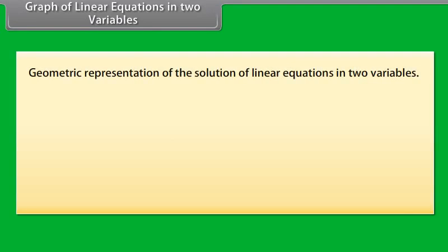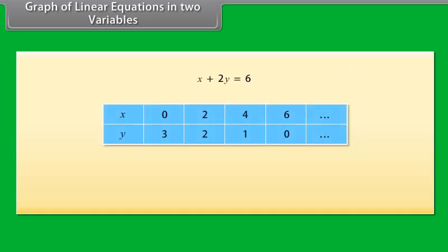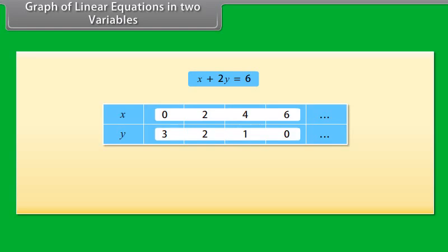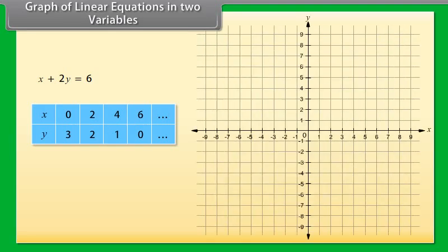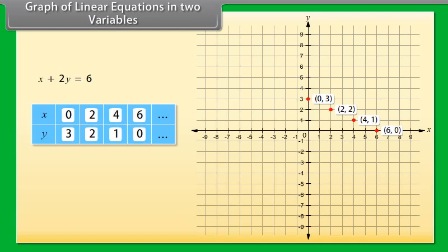Now let us look at the geometric representation of the solutions of linear equations in two variables. Look at this table — the solutions of the given equation are expressed here. These are the values of X and these are the values of Y. Let us plot these points on a graph paper. Taking X as 0 and Y as 3, this is the point obtained. Mark other points using these values, then join any two points to obtain a line. Let us join (0, 3) and (4, 1) and call this line AB.